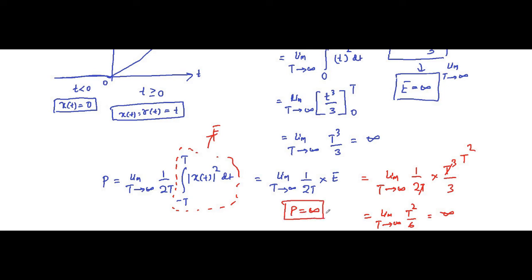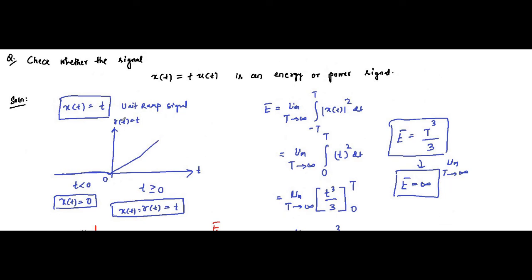This signal does not satisfy the conditions for either being an energy signal or a power signal. So it is neither an energy signal nor a power signal. It is not necessary that a signal must fall into one of these categories — there are signals which satisfy neither condition. The unit ramp signal is a good example of that concept.